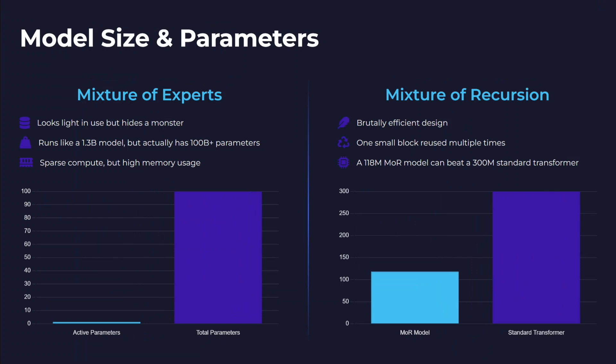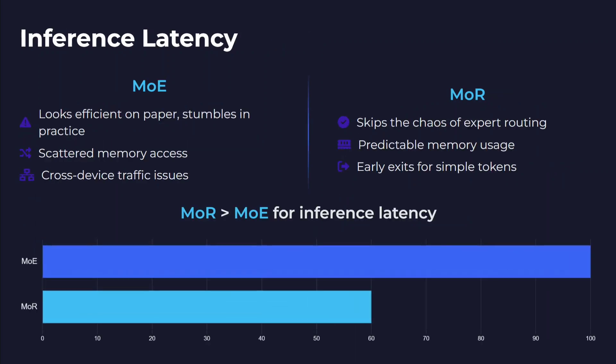Regarding model size and parameters, Mixture of Experts looks light in use but hides a monster — because you need to have the entire model ready. Even if the model has one trillion parameters and you're only activating 32 billion, the entire model still has to be with you. Sparse compute but heavy memory usage. In the case of MoR, it is very efficient because the same block is repeated multiple times, so you don't need to store repeated weights. A 118 million MoR model can beat a 300 million standard transformer.